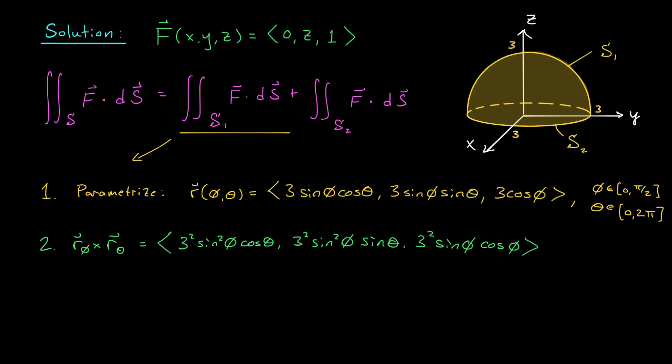The one thing we should worry a little bit about, though, is orientation. We were told that our surface is oriented inward. Is this vector pointing inward? No, it's not. We argued in the overview video that this vector is the outward-pointing normal. So we actually need the negative of this vector. We need minus R_φ cross R_θ. We'll make sure we use that in our calculations.